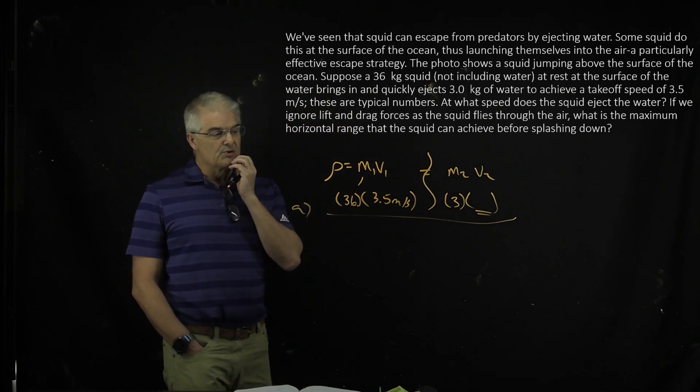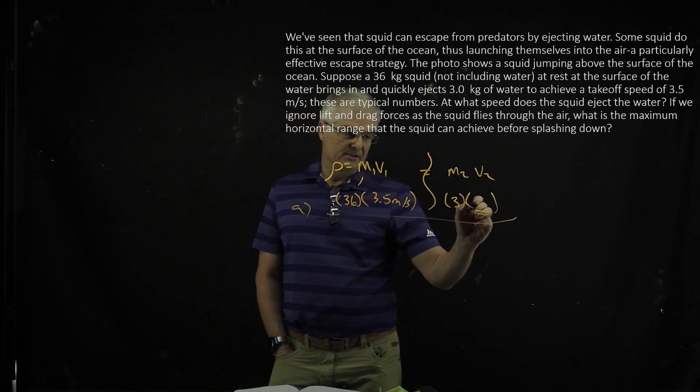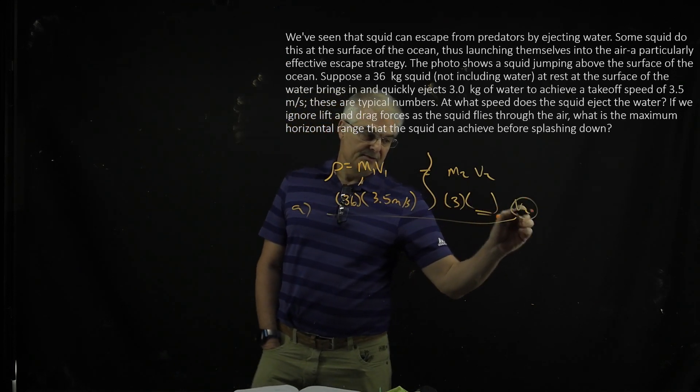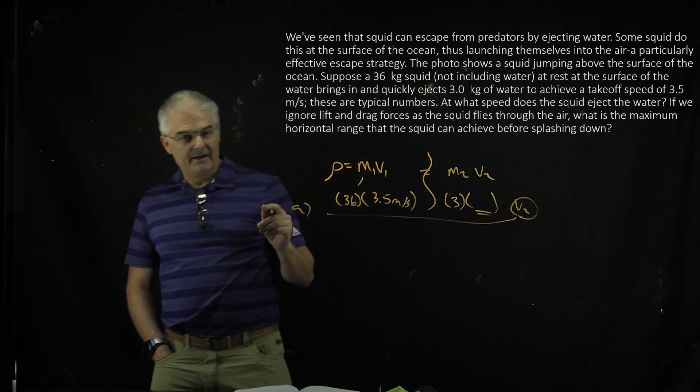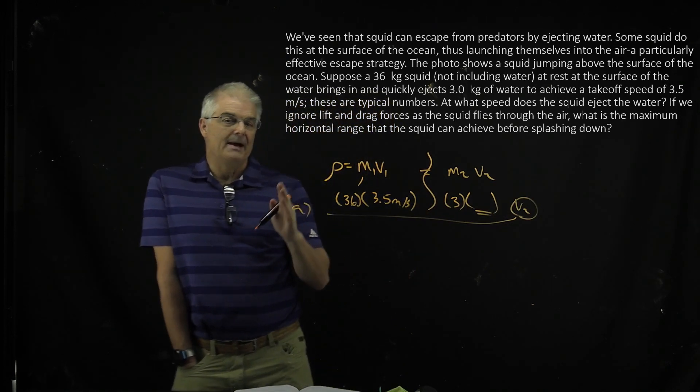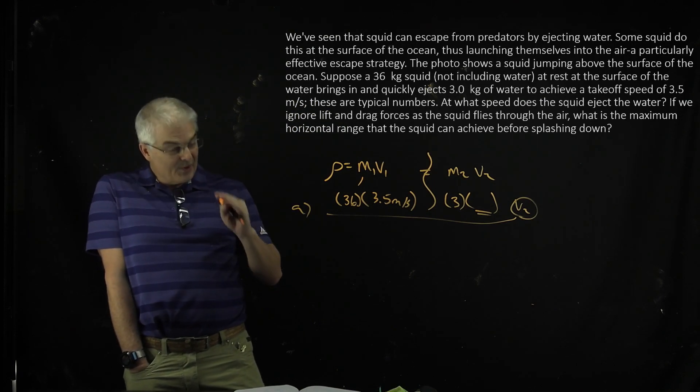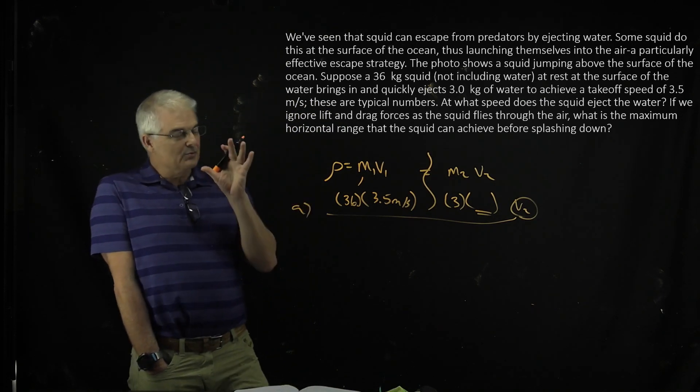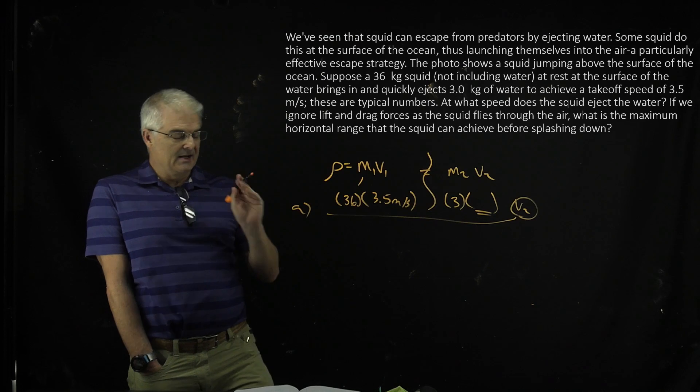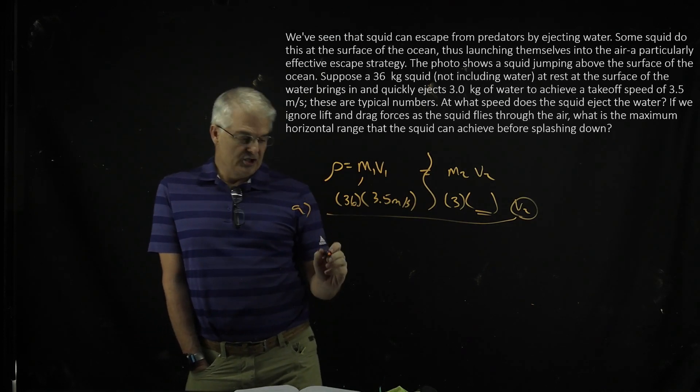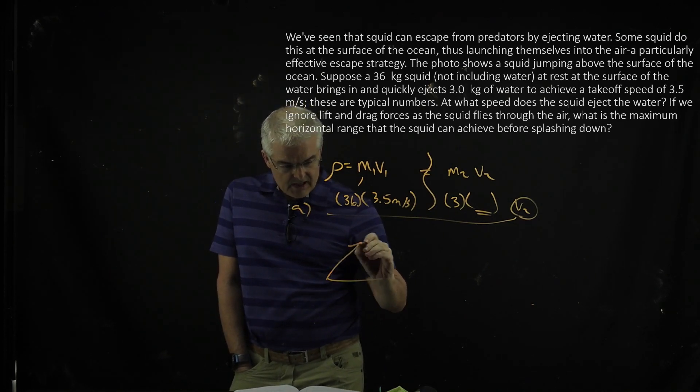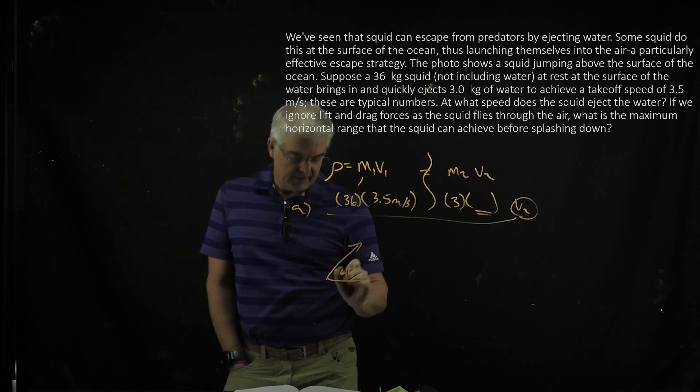But part B is where the trick is. You're going to need to know what this number is. Find what v2 is. Once you know that, his takeoff speed, it says, what is his maximum horizontal range? Now, you have to remember something. When you're having a range, this is a projectile motion problem, maximum range happens at a 45 degree angle.